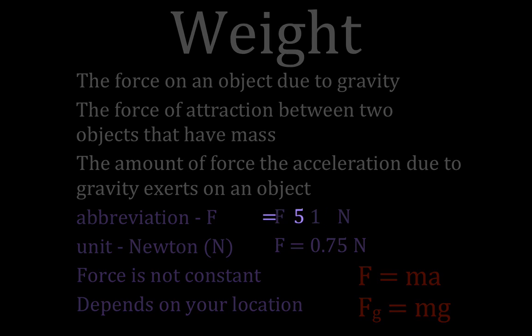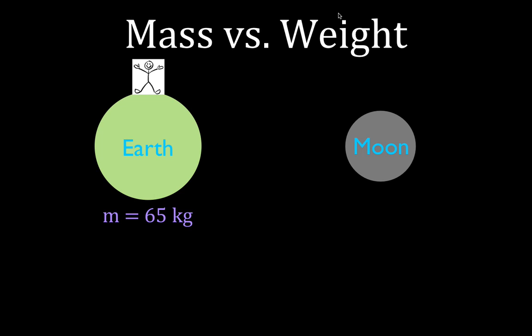Here's mass and weight. This is supposed to show you how they're different. Here you are on Earth. You have a mass of 65 kilograms. To calculate your weight, we use Newton's second law. The force of gravity, or the weight, is equal to your mass times the acceleration due to gravity. On the surface of Earth, the acceleration due to gravity is 9.81. So we take your mass and multiply that by 9.81 meters per second squared, and your weight on Earth is 638 newtons. That's the force of attraction between you and the Earth.